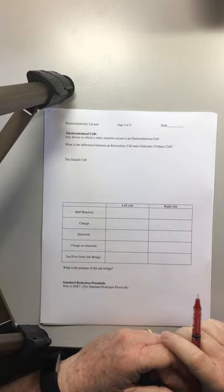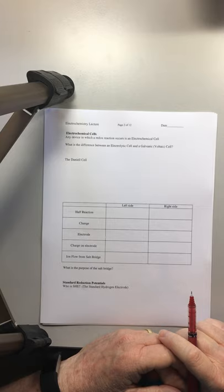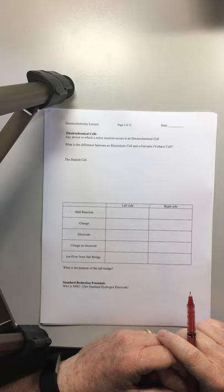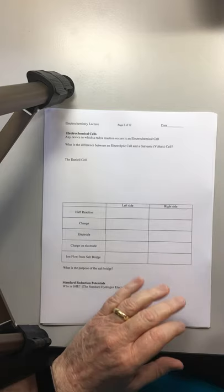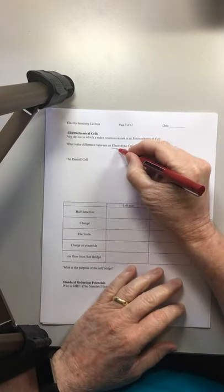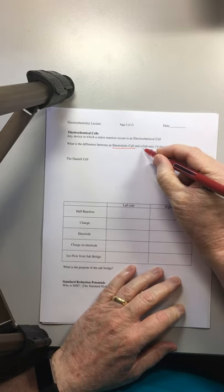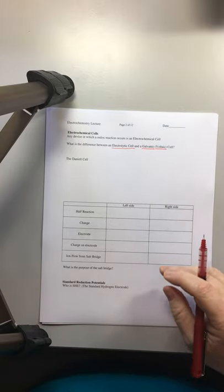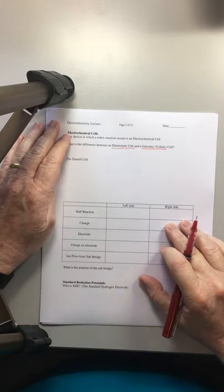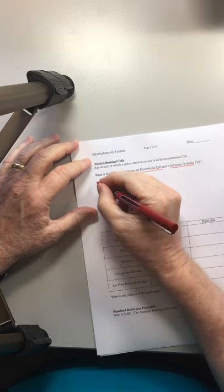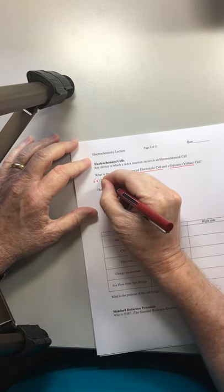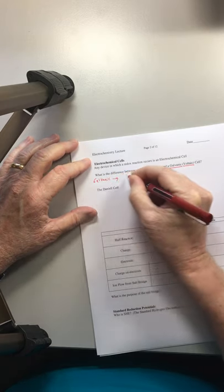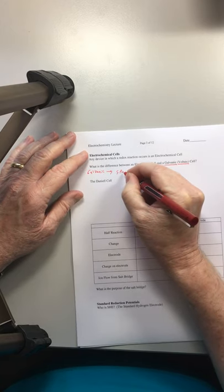So any device in which a redox reaction occurs is an electrochemical cell, and sometimes we can turn these into very useful devices. We're going to categorize them two ways, as electrolytic cells and as galvanic cells. The older name for galvanic is the voltaic cell. What's the difference? Galvanic cells are spontaneous reactions.